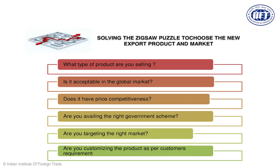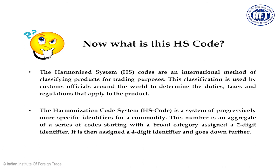It will all depend on certain parameters: what type of product are you selling, is it acceptable in the global market, does it have price competition, are you availing the right government scheme, are you targeting the right market, and — extremely important — are you customizing the product as per the customer's requirement in that market? Step one: when you enter an export market, you do not sell a product. You sell a number attached to that product, which we normally call the Harmonized System of Code.